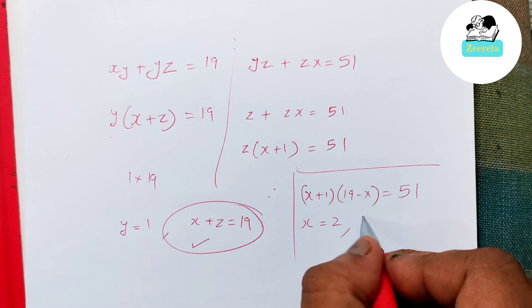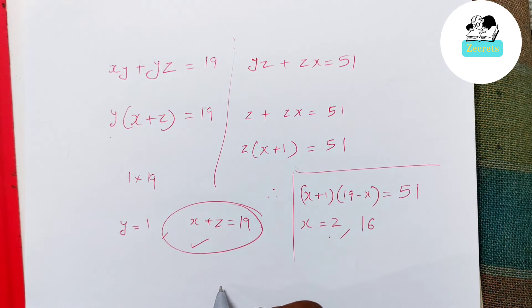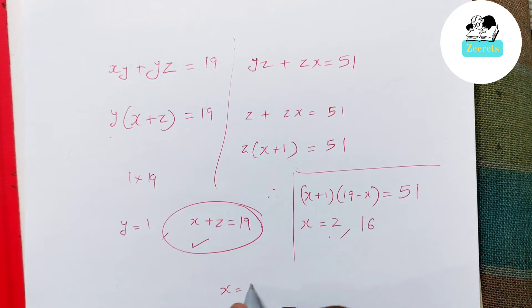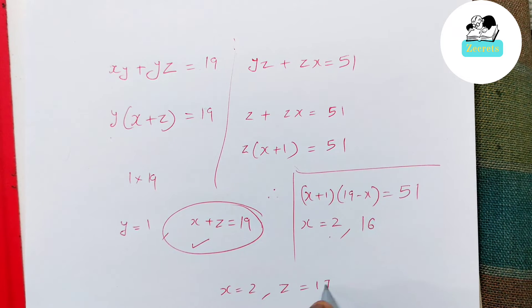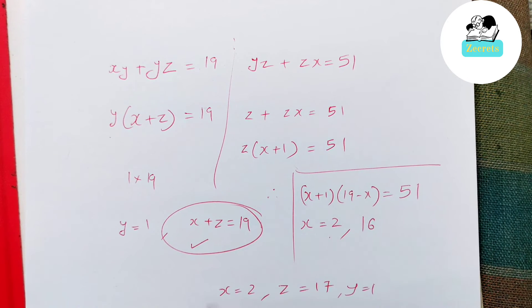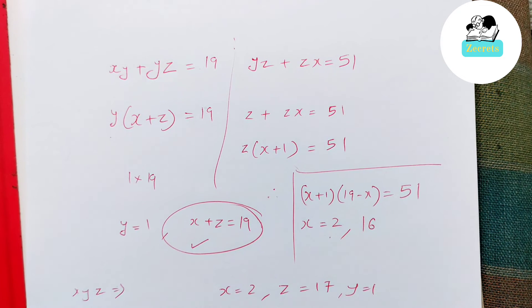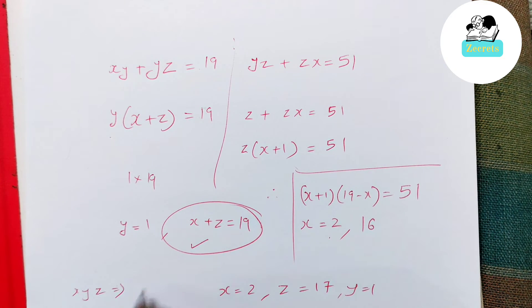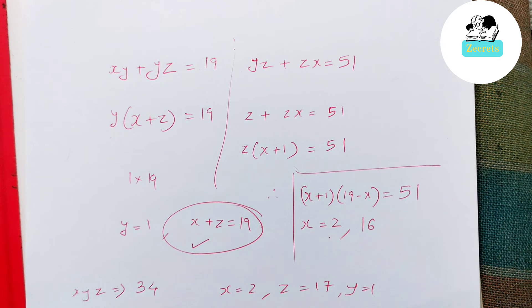x equals 2 or 16. When x is 2, z becomes 17, y was already 1. So our value of xyz would be 17 times 2 times 1, which is 34.